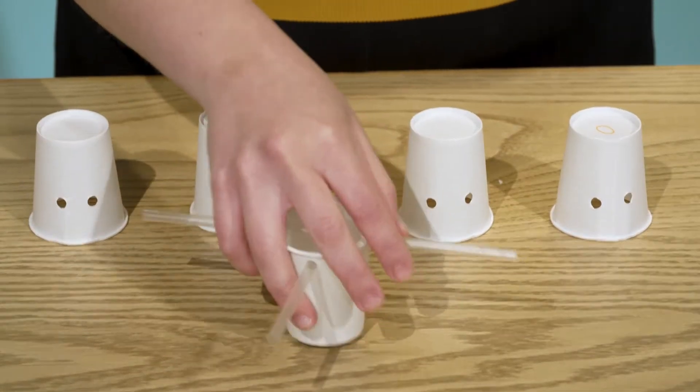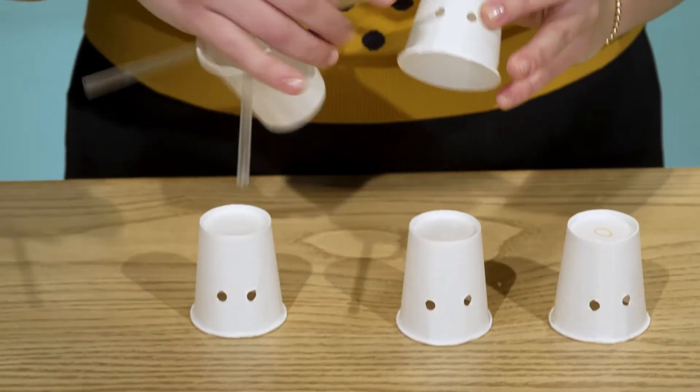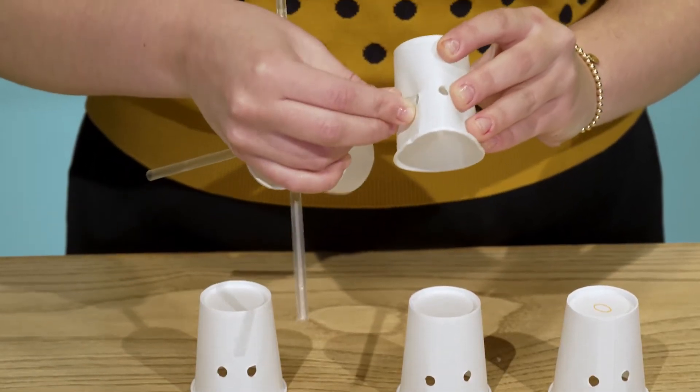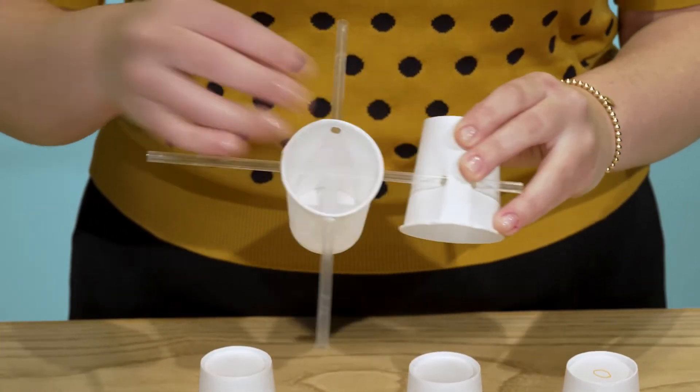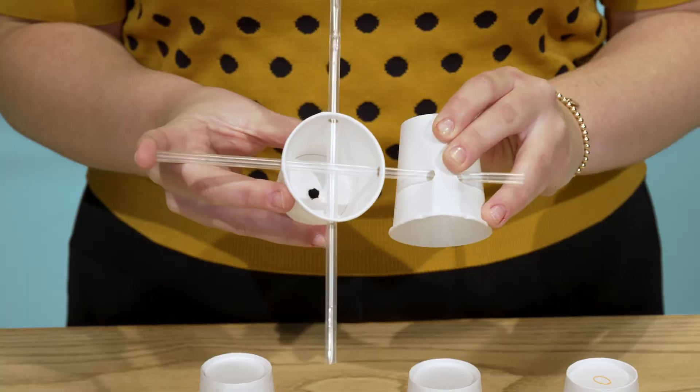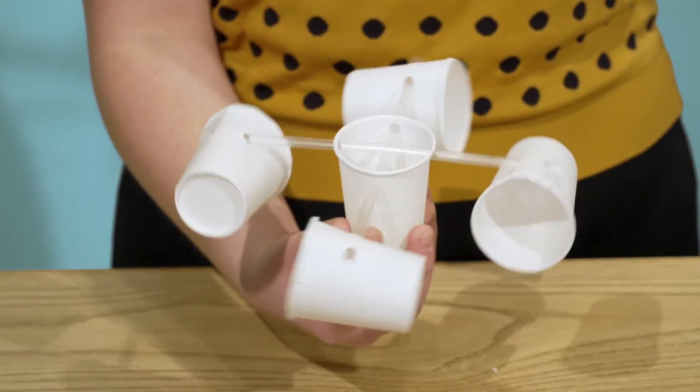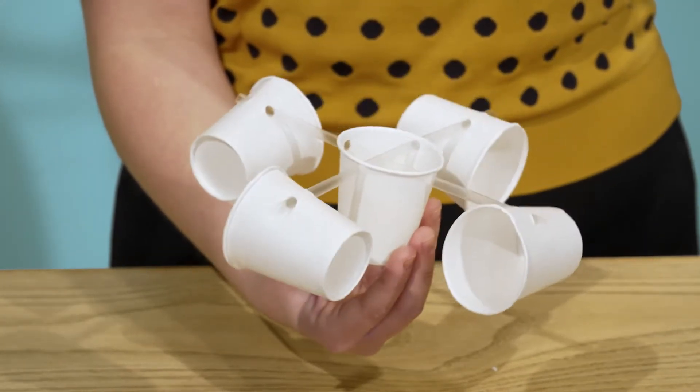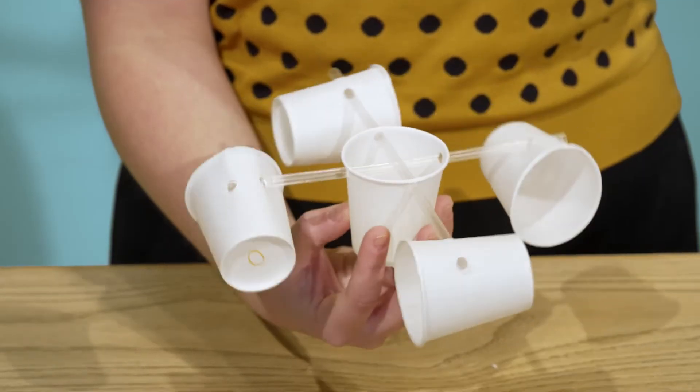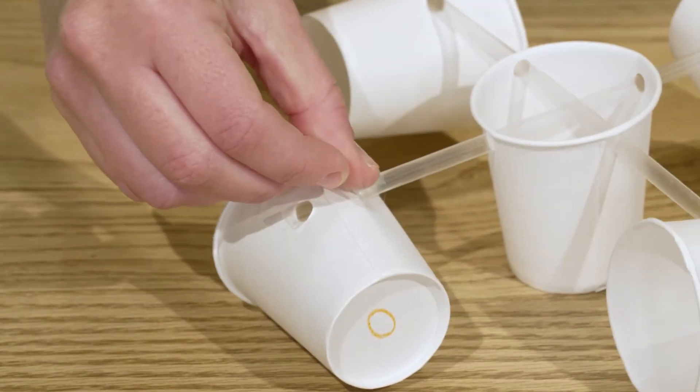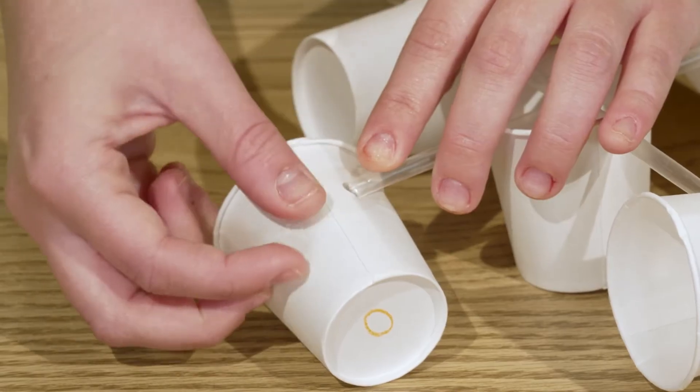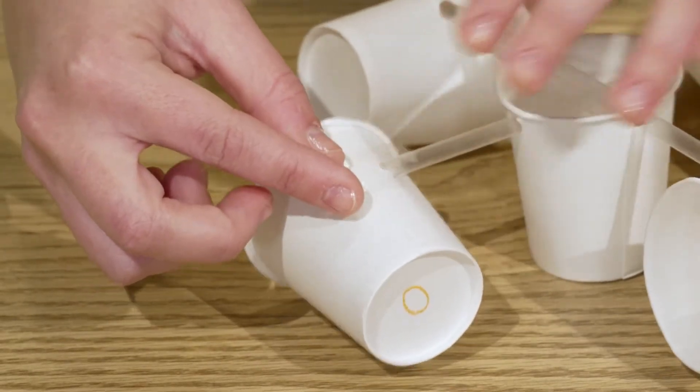Now it's time to connect everything together. Grab the first cup you made with the straws in it. Push the end of the straws through the two holes in the other four cups. This is very important: make sure all your cups face the same direction. If any of your cups are having a hard time staying put on the straw, you can use a little piece of tape to hold it in place.